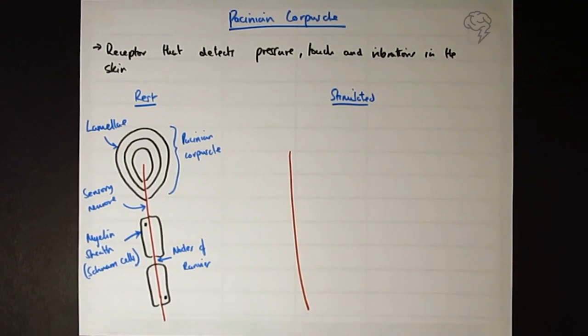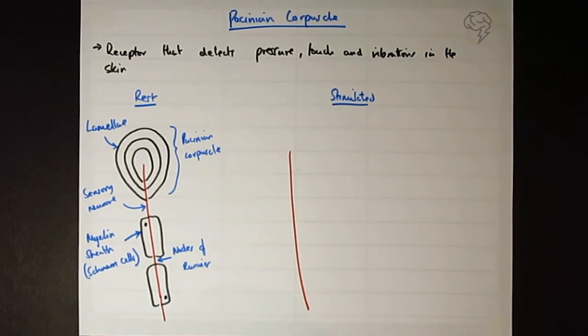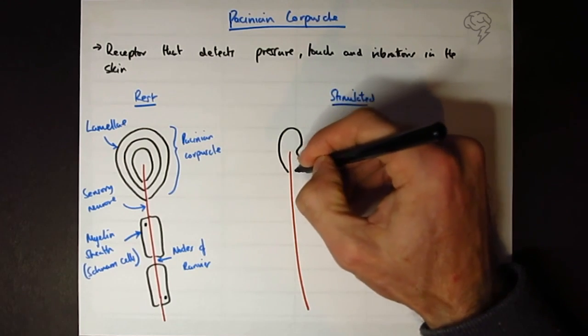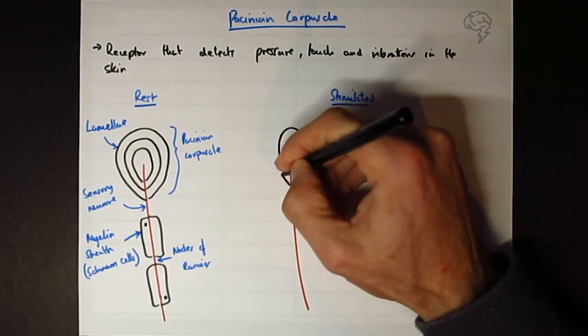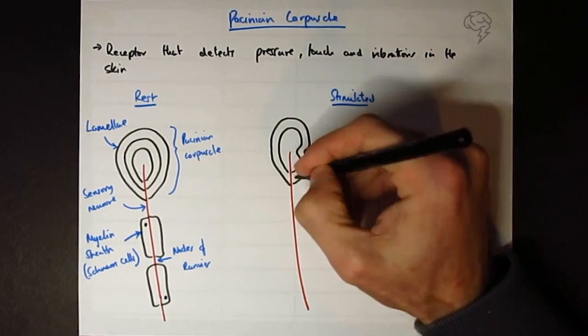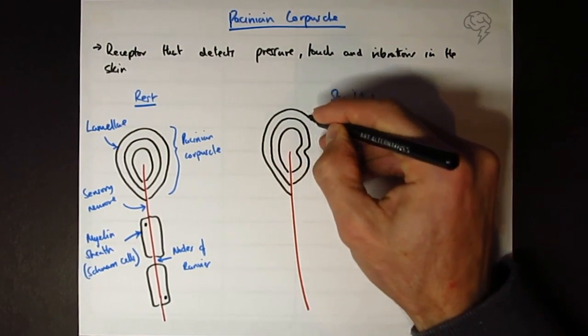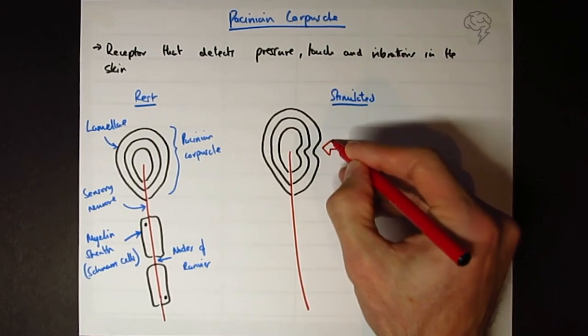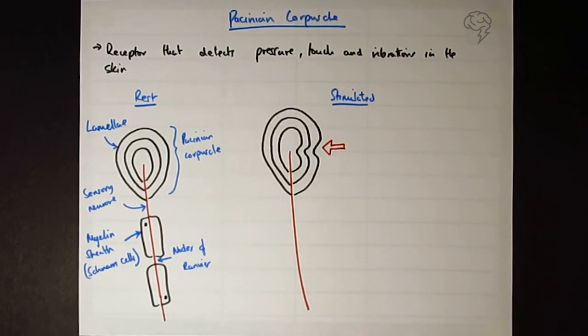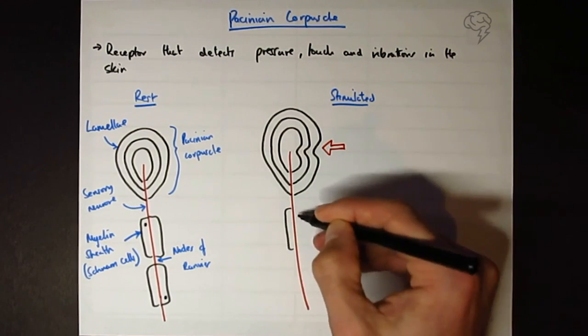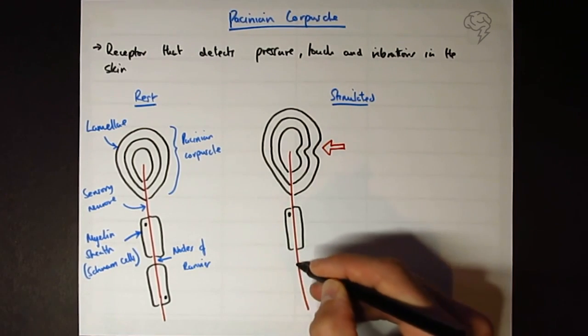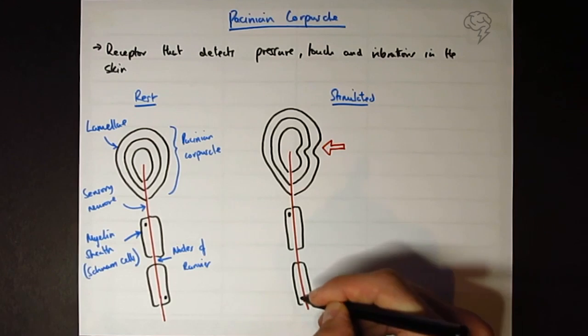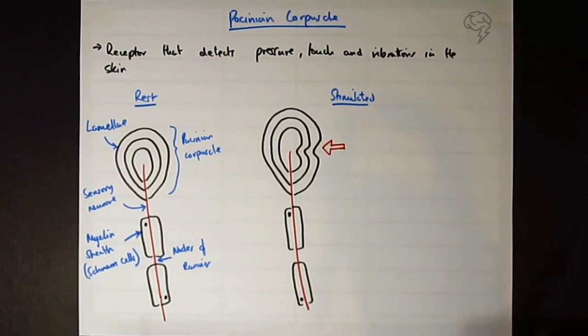So I'm going to draw my same sensory neuron over here, except this time, we're going to have pressure pushing in and deforming or bending the lamellae. So let's just symbolize that with an arrow, and let's just catch up on the rest of the drawing. So what's happening here?